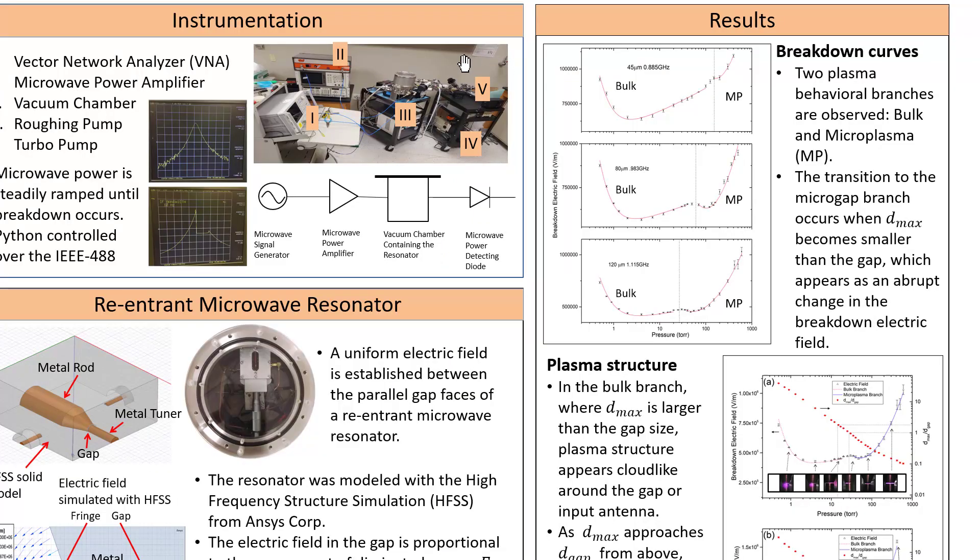Each breakdown curve is composed of two branches, the bulk branch and the micro-plasma branch. In the lower pressure bulk branch, the breakdown occurs in the fringing field around the gap, and in the higher pressure micro-plasma branch, breakdown occurs inside the gap. And the transition between those two regimes occurs at a pressure that increases as the gap becomes smaller.